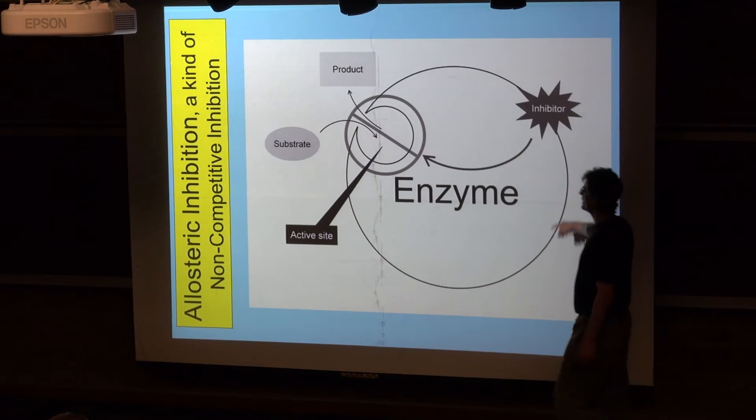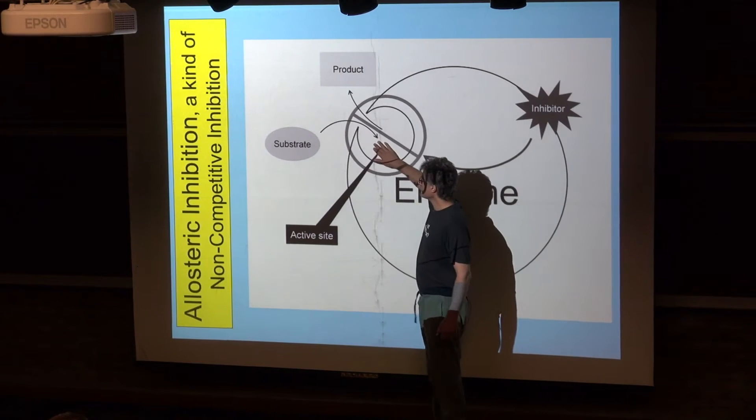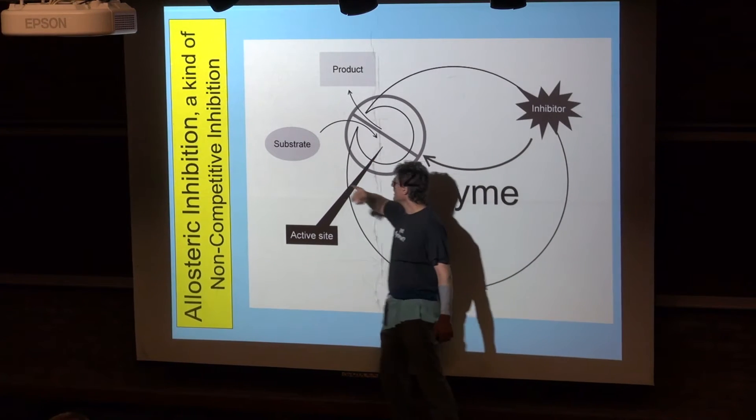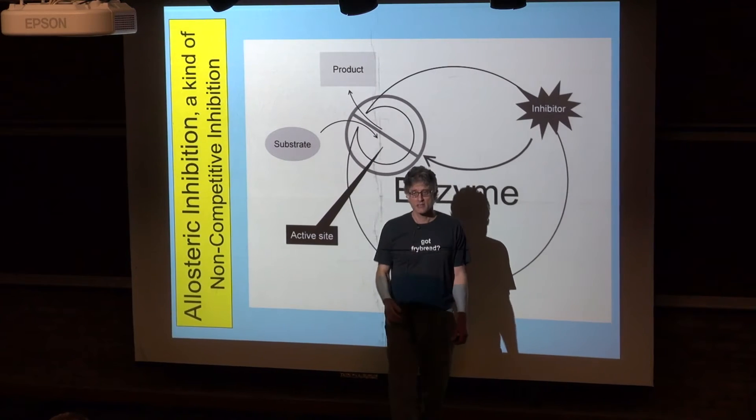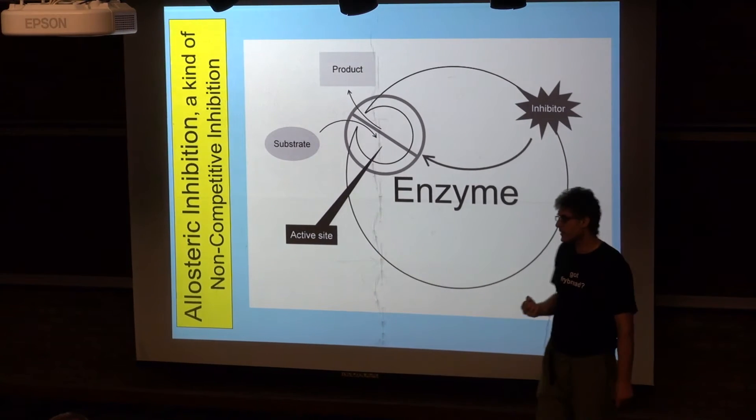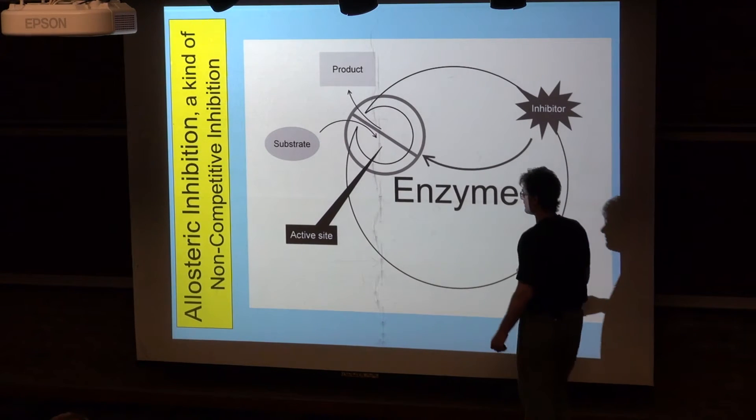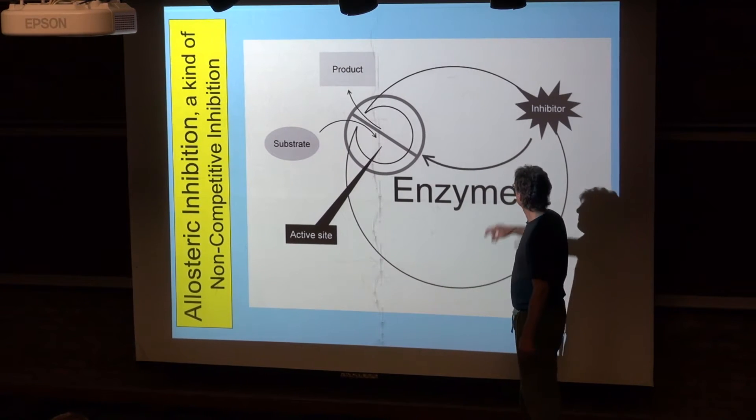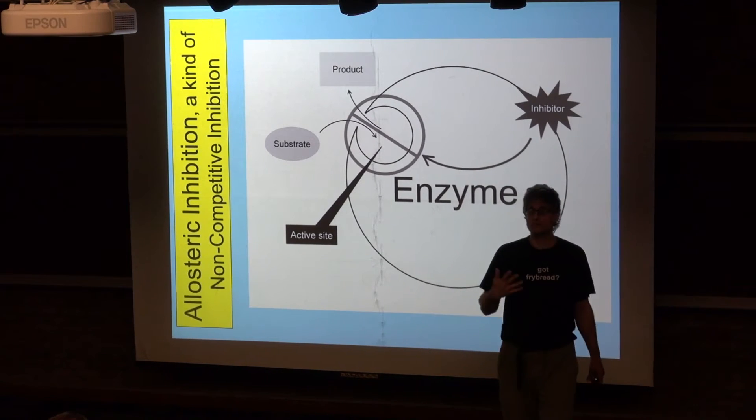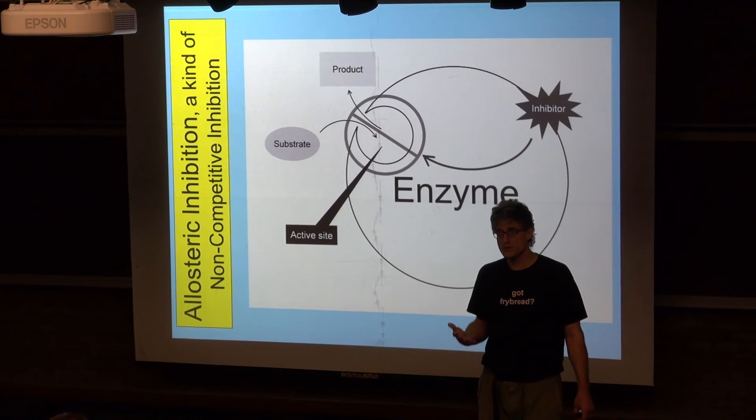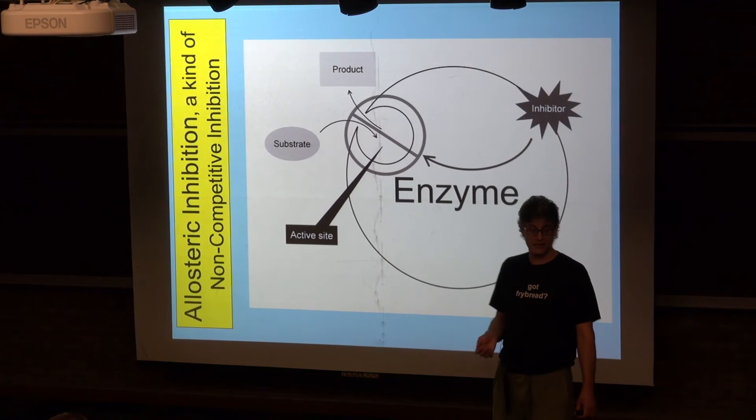What we have here is our enzyme and the active site of the enzyme. Substrate goes in, is converted into product, comes out. We can block that catalytic process typically by blocking binding to the substrate by having an inhibitor. But here the inhibitor is binding to a place on the protein, on the enzyme, other than the active site.